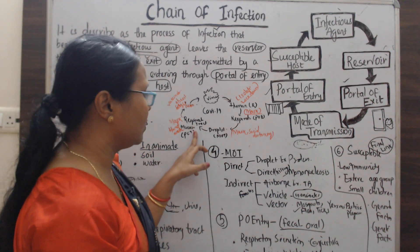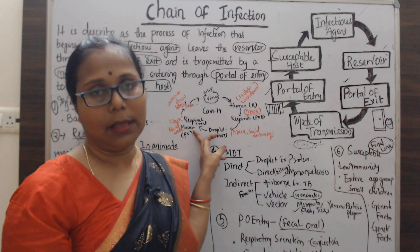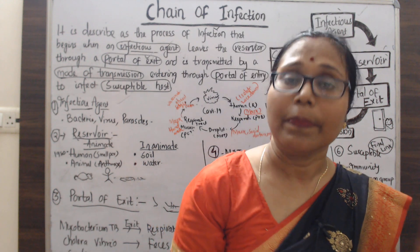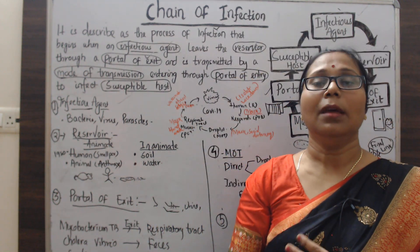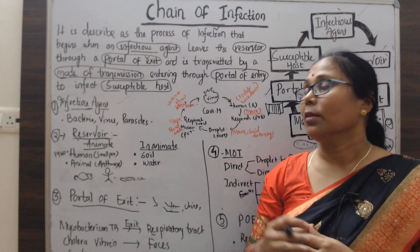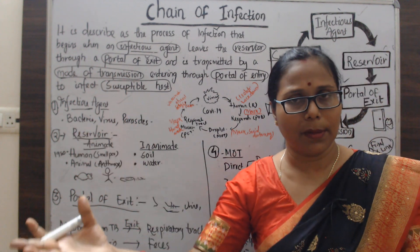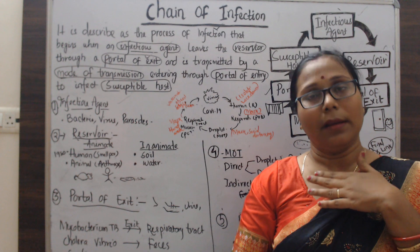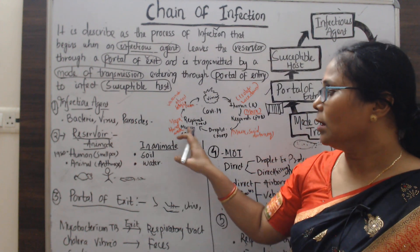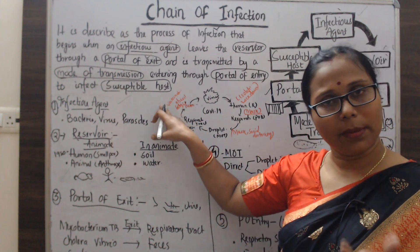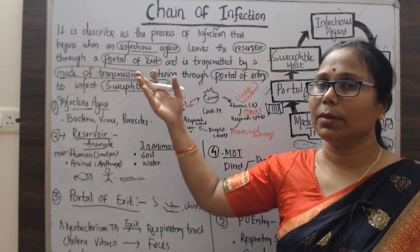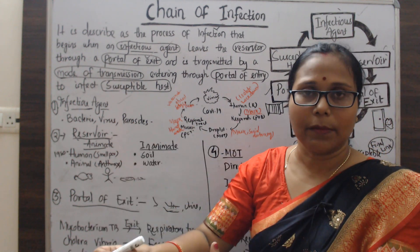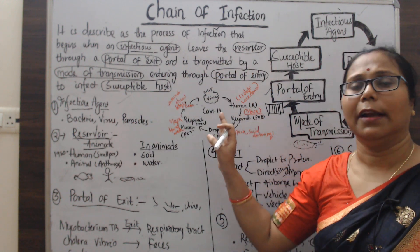The portal of entry for COVID-19 is the respiratory tract. Governments made masks compulsory to block this entry. Hand washing was also made compulsory because germs on your hands can enter through the eyes via conjunctival secretion or through the nasal area if you touch it. Those with weak immunity are the susceptible host. Governments made vaccination compulsory for all people to avoid the spread of infection through this chain.